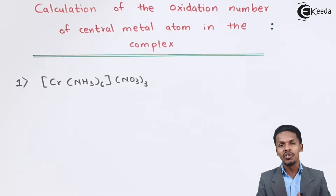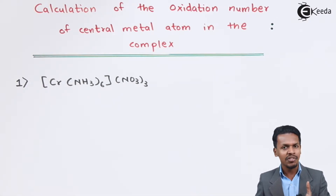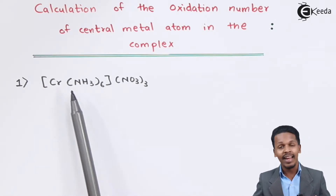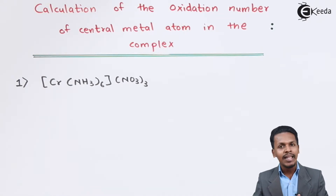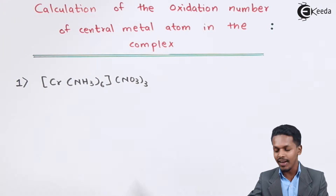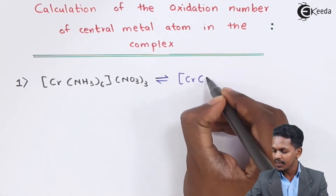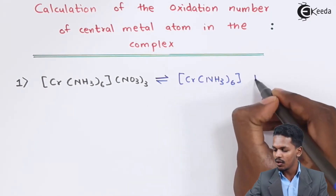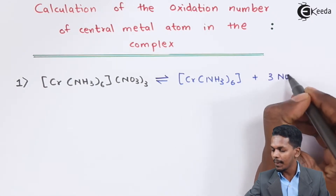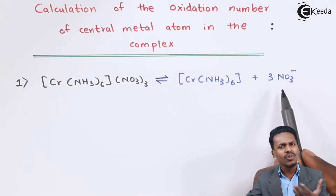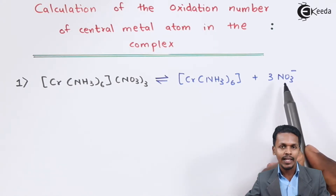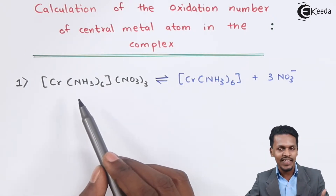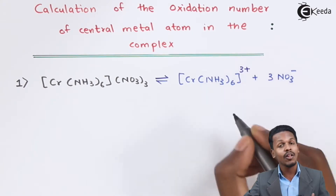We are going to talk about the calculation for the central metal atom's oxidation number in a complex. For the first compound, we can find that there are primary as well as secondary entities. In this case, NO₃ — the nitrate ion — is acting as a primary entity. Whenever this complex gets ionized, it will ionize into [Cr(NH₃)₆]³⁺ and three moles of NO₃⁻ ion. The nitrate has a minus one charge. Based on this, we have to satisfy the primary as well as the secondary valency, so the complex ion acquires a 3+ positive charge.